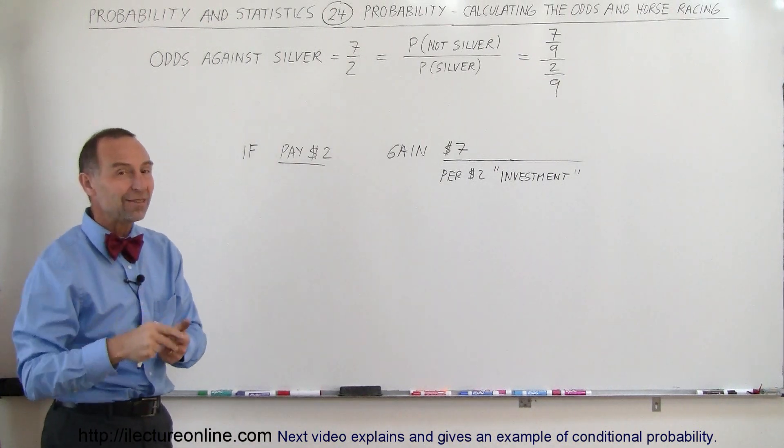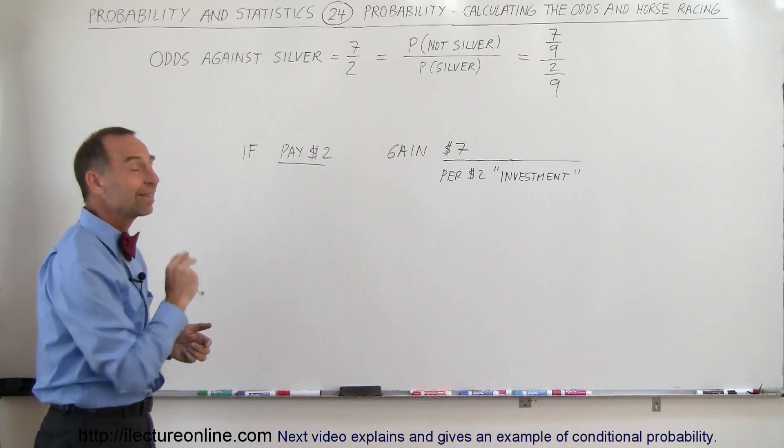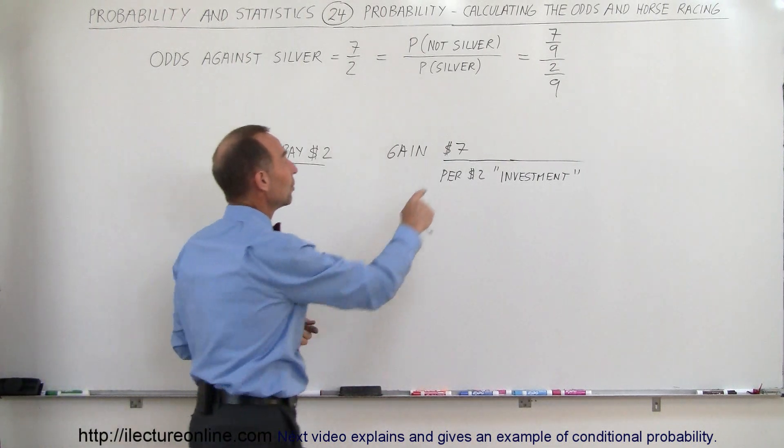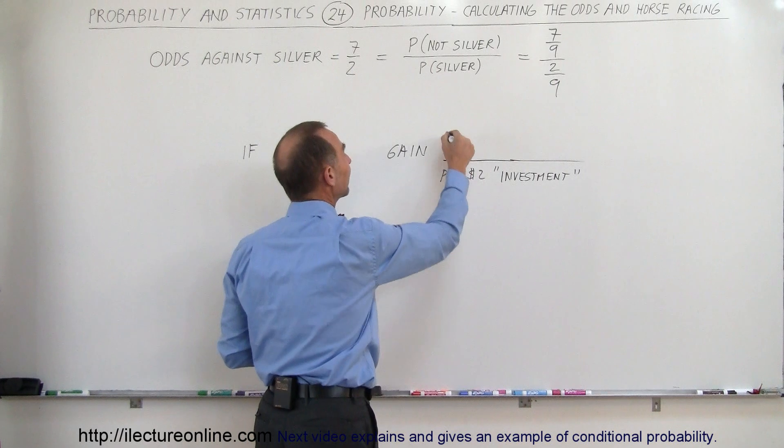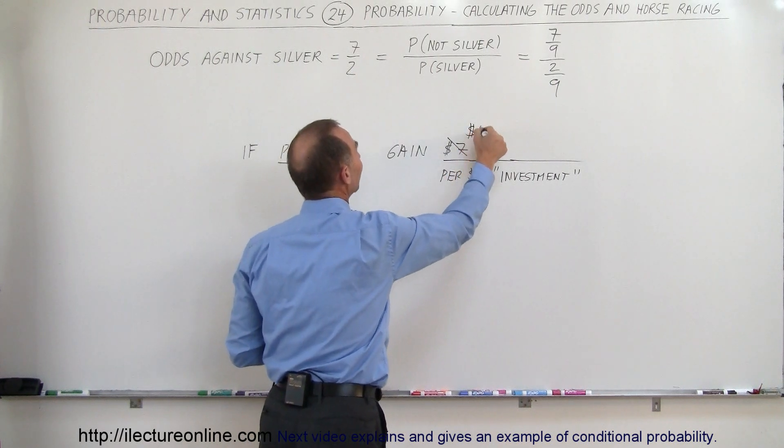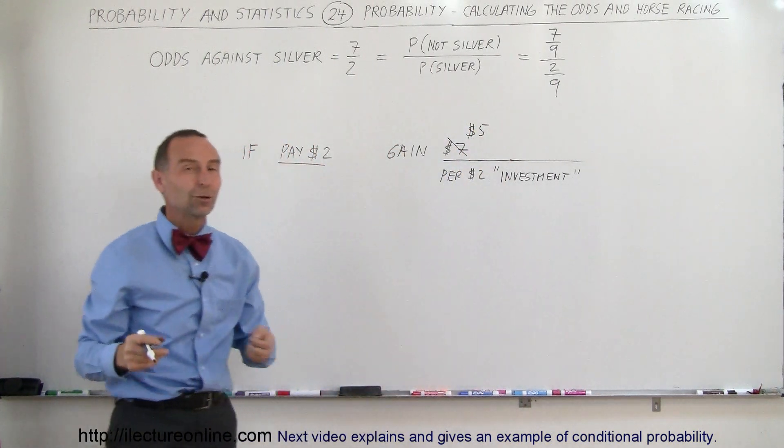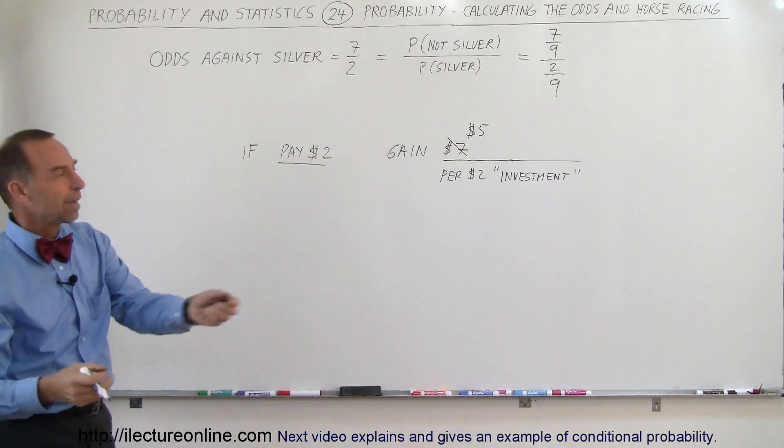So in case Silver wins and the odds are 7 to 2, then you only get $7 back, so you don't gain $7, the gain now becomes only $5 because they give 7 to 2, they already gave them $2, they give you the $2 back plus another $5.